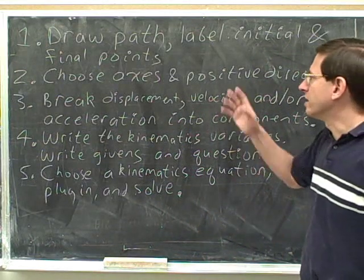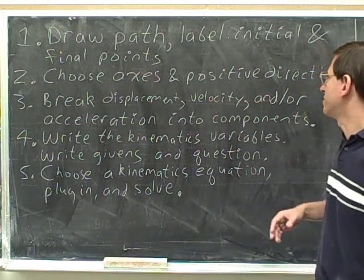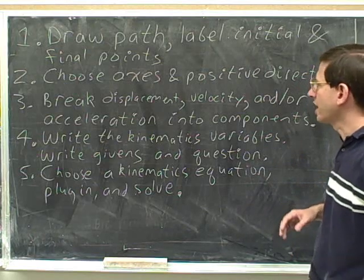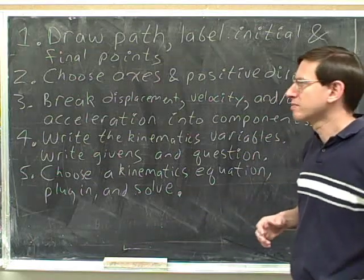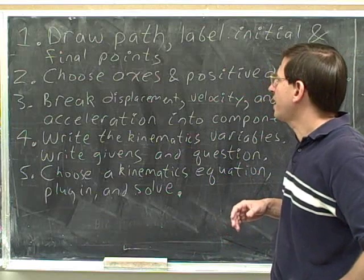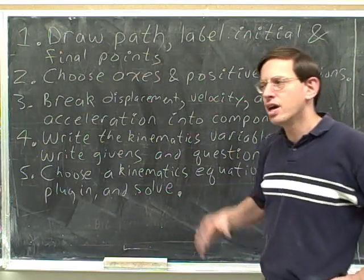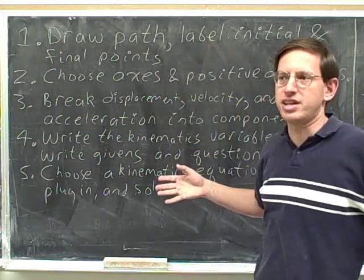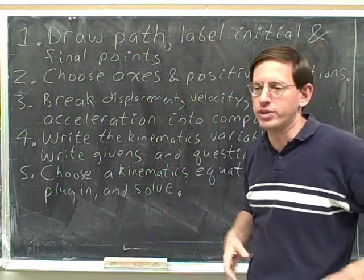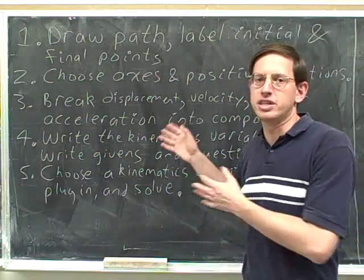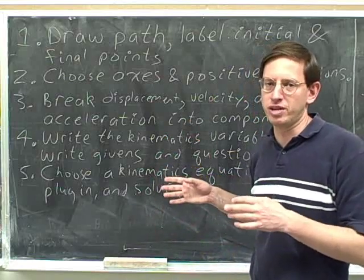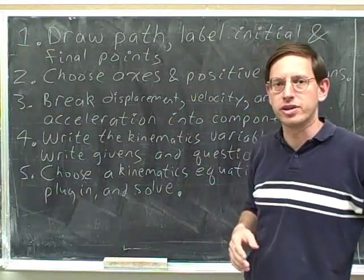The steps are: one, draw the path of the object and label the initial and final points on the path. Step one, draw the path of the object and label the initial and final points on the path. Right now, I'm just going to read out the various steps, and then we're going to go into some examples that will show how to use these steps. So don't worry if the steps don't really make total sense right now. We'll do some examples to make these clearer.